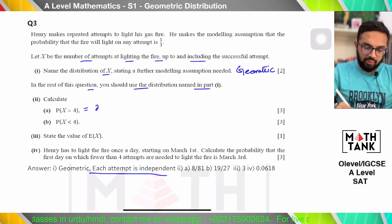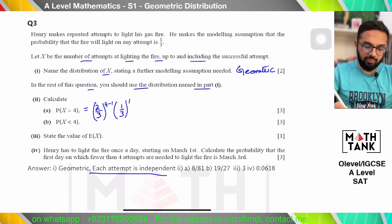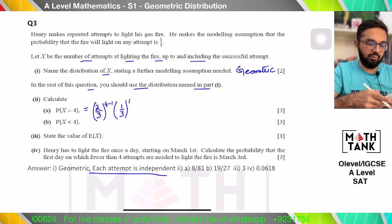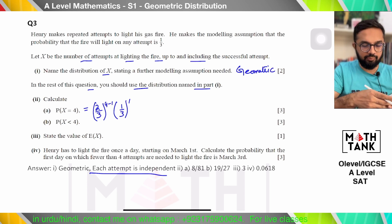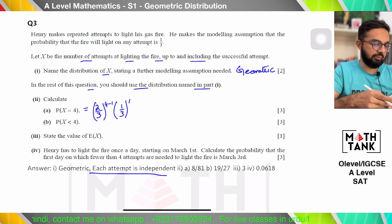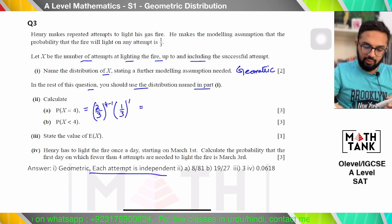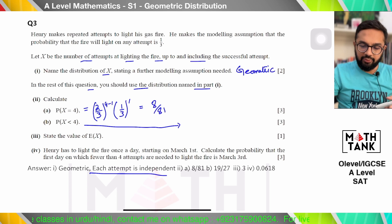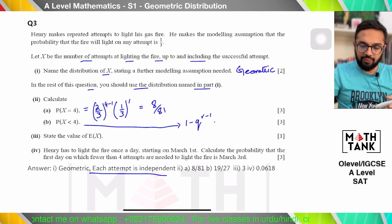In the rest of the question we use the geometric distribution. So P(X = 4) is (2/3)^(4−1) × (1/3)^1, which gives 8/81.